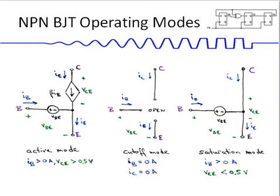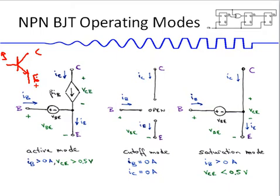The way we draw a transistor is with the typical diagram showing the transistor with a base, a collector, and an emitter. This would be an NPN bipolar junction transistor, shown here when it is in active mode. In active mode, the current ib that flows into the base gets multiplied by the factor beta and becomes the current that flows between the collector and the emitter.